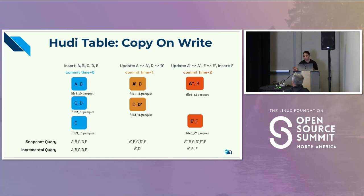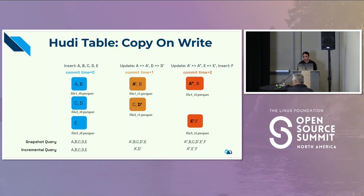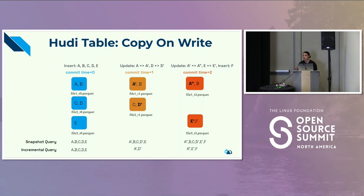In the red-orange box at commit time 2, A prime goes to A double prime, B and C don't change, D prime doesn't change, E gets updated to E prime, and there's a new insert F. If you ran a snapshot query on commit time 2, you'd see A double prime, B, C, D prime, E prime, and F. An incremental query between commit 1 and commit 2 gives you A double prime, E prime, and the new insertion F.